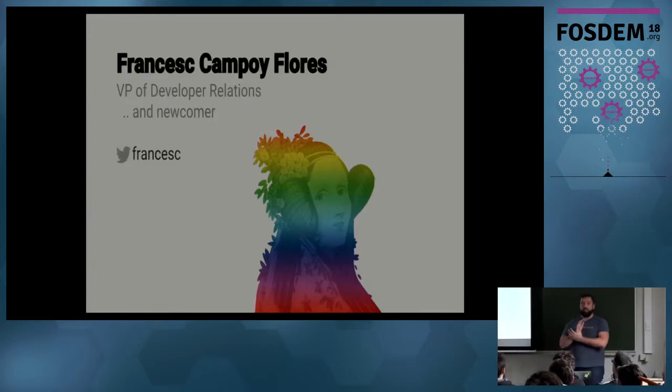I'm Francis Campo Torres, VP of the Bono Probation, working at Sourced, and I'm going to be talking about a project called Bubblefish.